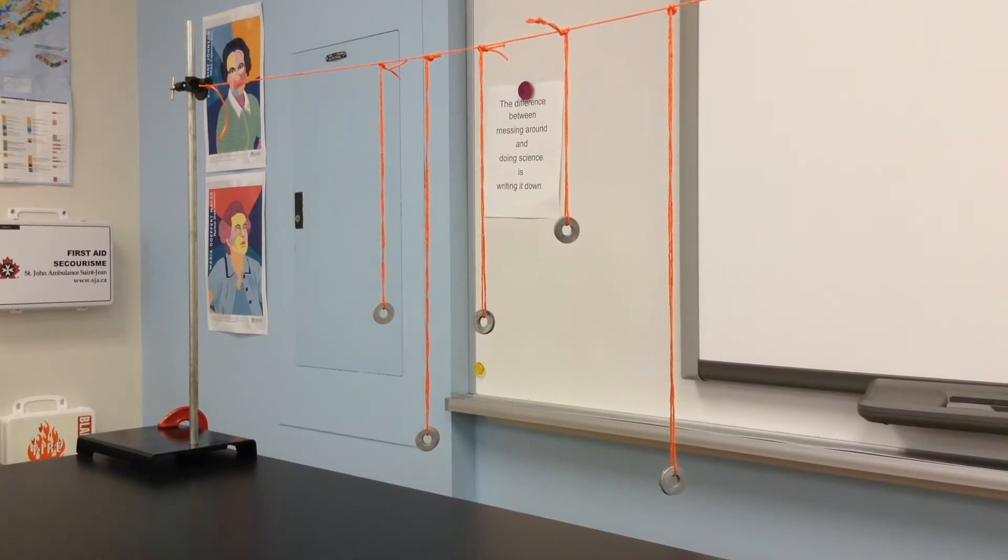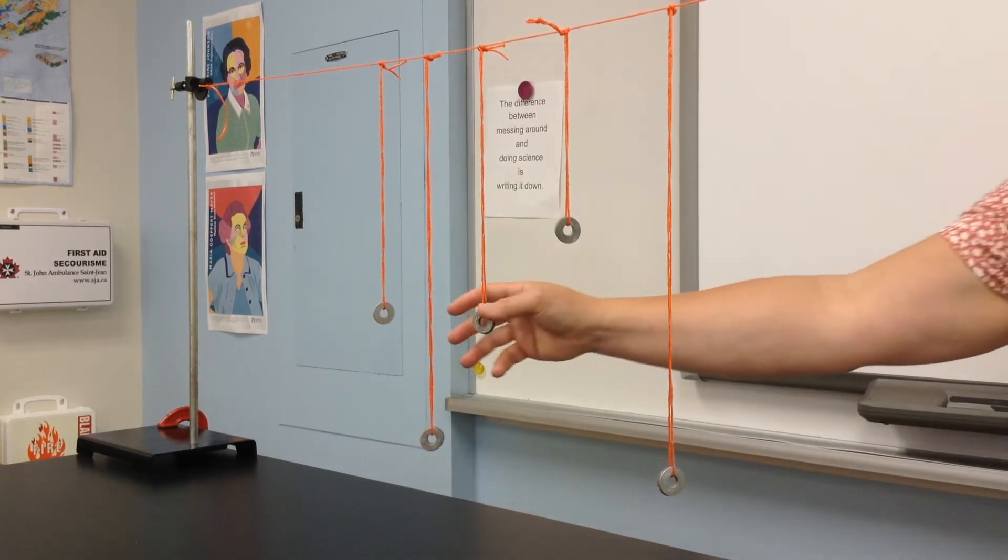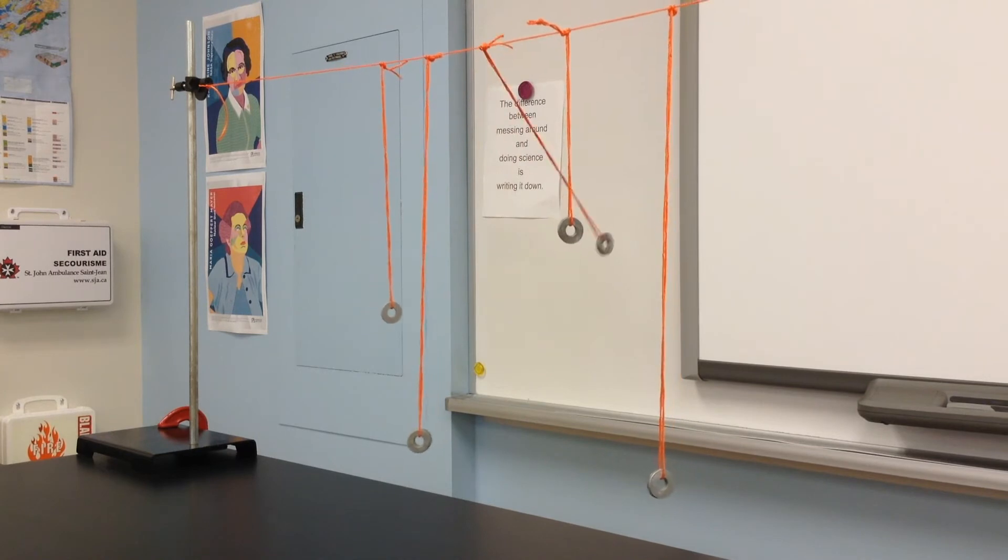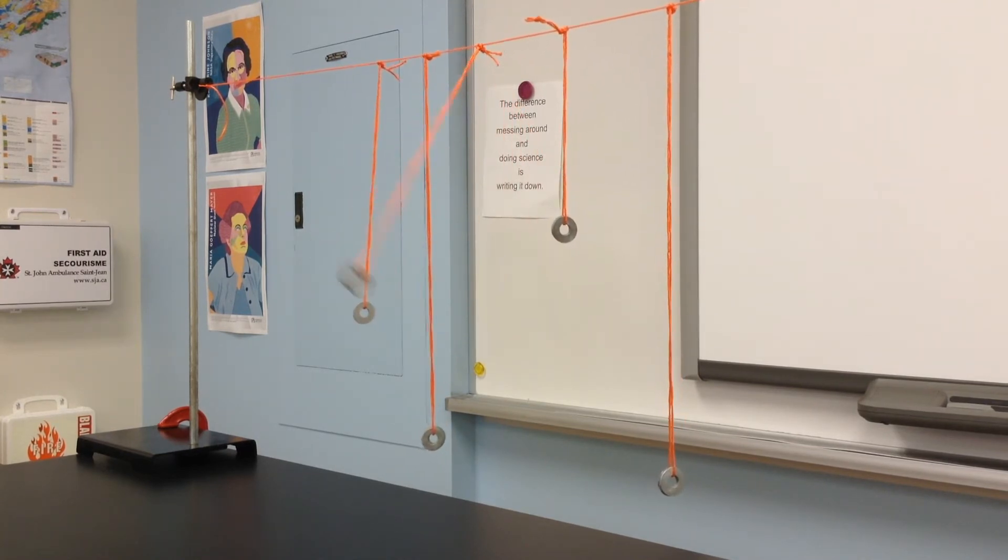Now here in this example we're going to start one of the shorter pendulums swinging, and as we expect the same length pendulum will also show this resonance and start swinging.